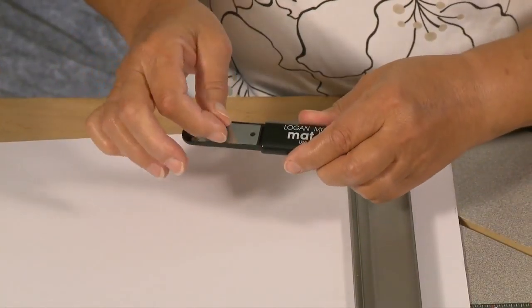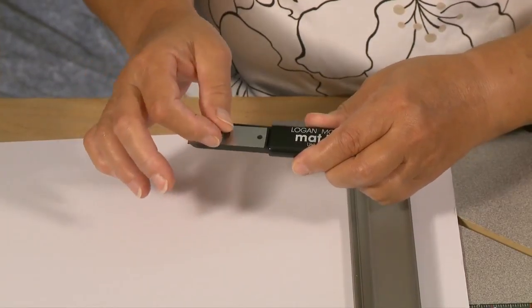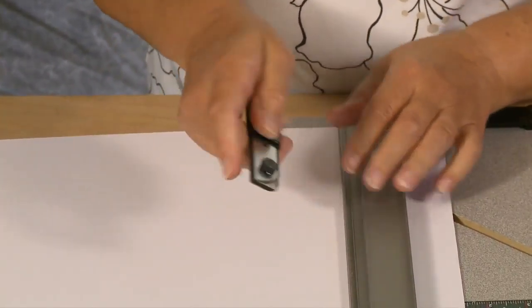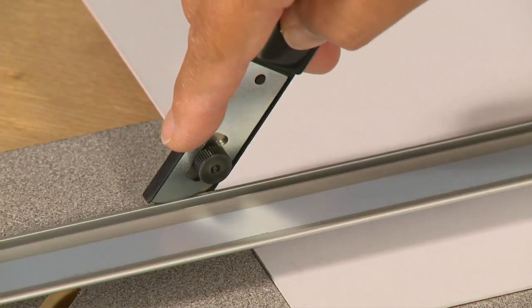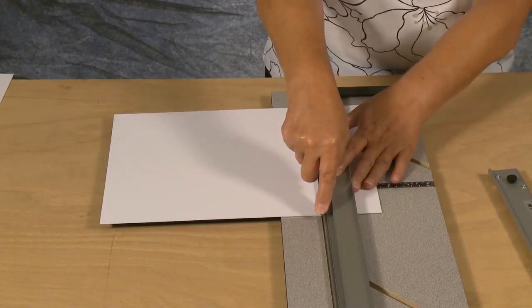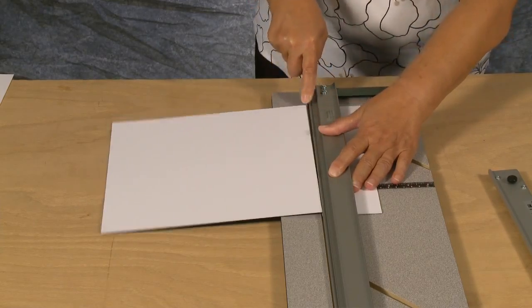Adjust the blade depth on the mat knife to the standard thickness setting. To make the cut, see that the blade cover is riding on the top of the aluminum rail, held at a 45 degree angle, and pull straight back to make your cut.